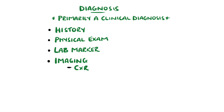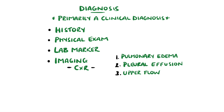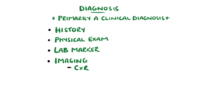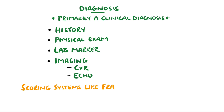Imaging can include X-rays which may show pulmonary edema, pleural effusion, upper lobe flow distribution, and cardiomegaly. Echocardiography can be used to see the dynamics of the heart including its valves, and to measure volumes of the chambers as well as the ejection fraction. Several scoring criteria exist which combine the above features, including the Framingham score or the Boston criteria.